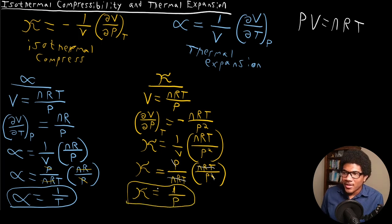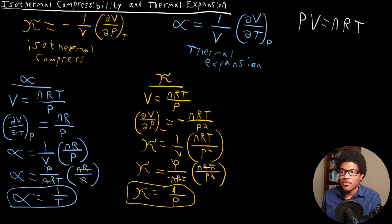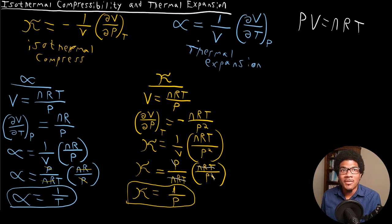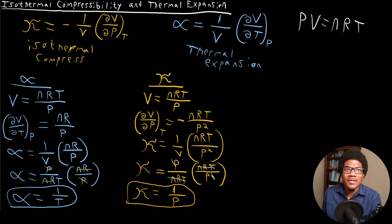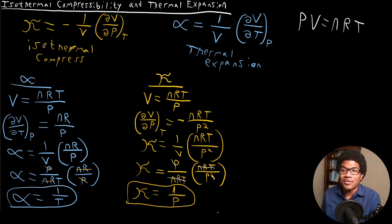So we get these expressions for alpha and kappa for an ideal gas — both equal to the inverse of temperature and pressure respectively. Keep in mind, these properties are more general than just an ideal gas. If you have any equation of state that gives you the volume, you can get its compressibility. Depending on the state equation, certain gases will be more compressible than others, and that's something we can quantify by calculating these properties.